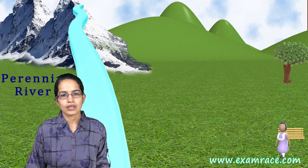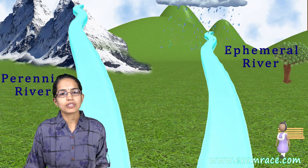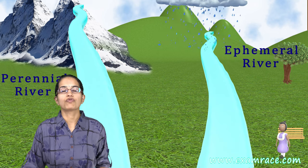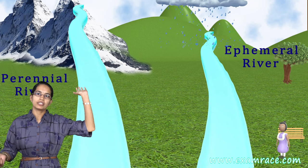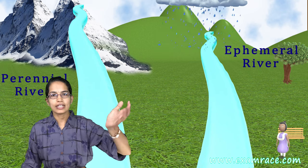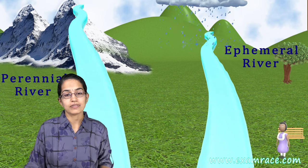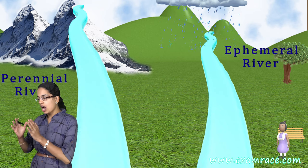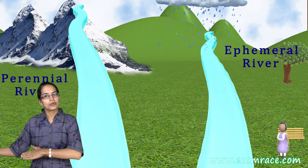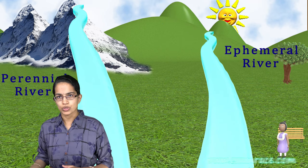One very important term is the perennial river and the ephemeral river. Perennial rivers flow throughout the year — glaciers melting would be an example of perennial rivers. Ephemeral rivers are those which carry water during the rainy season but turn dry in other seasons.